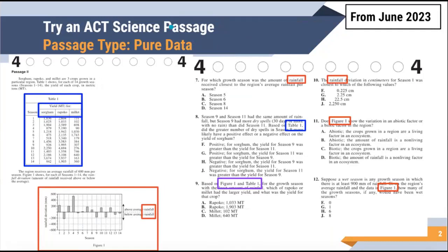So the first thing I would do, I would not read this unless you're a super fast reader, I would just maybe annotate the two pieces of data that they give you. So you can see table one and table one talks about yield. Yield means like how much is grown for three different plants. And then you see figure one and figure one talks about rainfall. So we've got how much these three plants grow and we've got rainfall and it looks like we've got 14 seasons here and 14 seasons here.